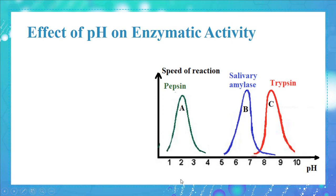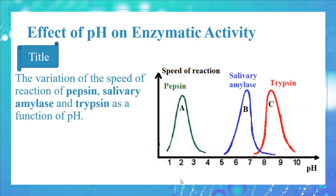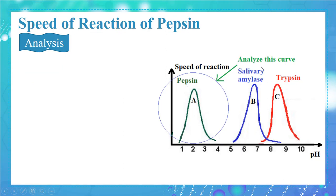We will now study the effect of pH on enzymatic activity. This graph shows the variation of the speed of reaction of pepsin, salivary amylase, and trypsin as a function of pH. Pepsin and trypsin are enzymes that act on proteins.